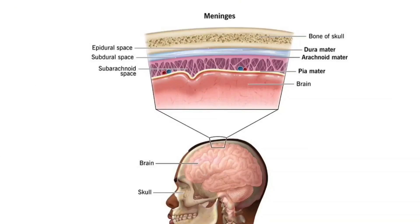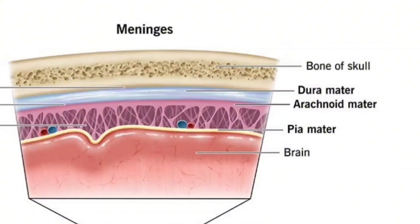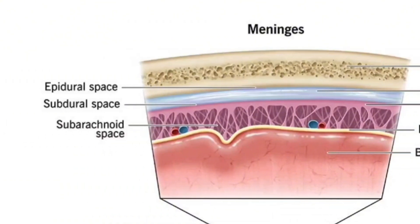Now let's look at the actual layers and spaces around the brain. At the very top is the skull, which protects the brain from injury. Just beneath it is the dura mater, the outermost layer of the brain coverings. Under the dura is the arachnoid mater, which looks like a spiderweb, and below that, tightly hugging the brain surface, is the pia mater. The epidural space lies between the skull and dura mater, the subdural space between the dura mater and arachnoid mater, and the subarachnoid space between the arachnoid and pia mater.